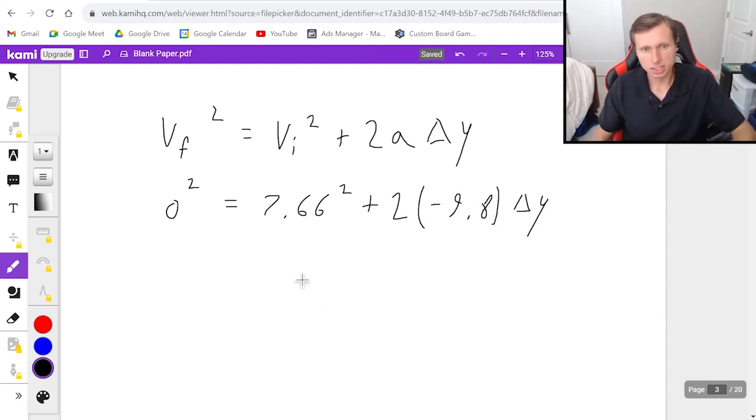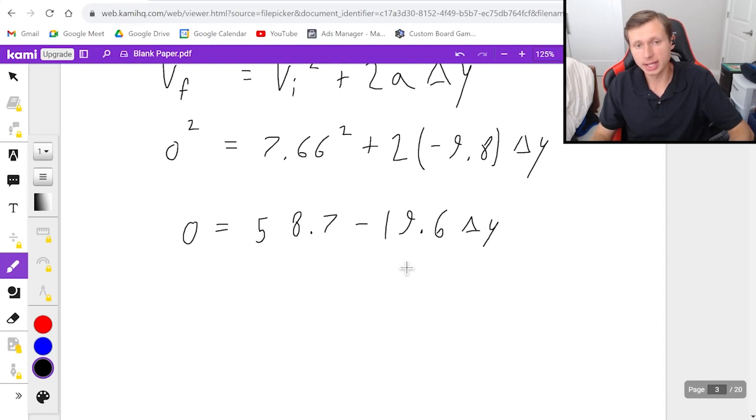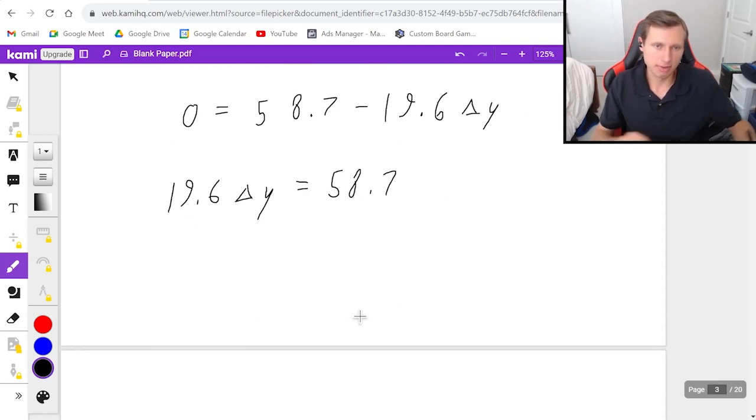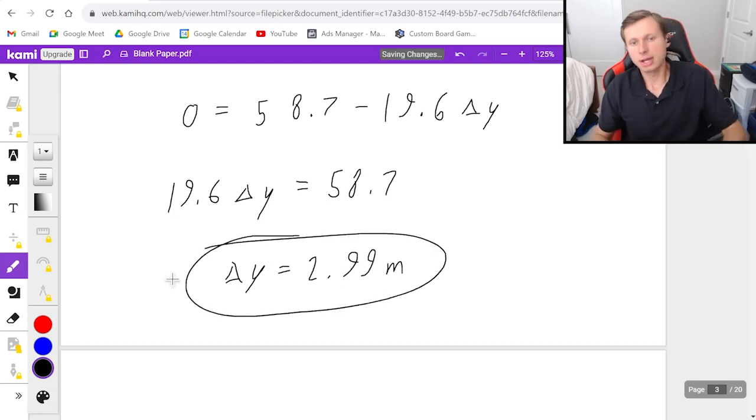And now I just got to start simplifying this. On the left, we have zero. On the right, that's going to be about 58.7 minus 19.6 delta y. And then if I want to solve for delta y, I'm going to add 19.6 delta y to both sides equals 58.7. And then we'll just divide by 19.6. And that will give me an answer of about 2.99 meters. You could round up to 3 if you wanted. I don't really care. But there's our answer. There's the peak height for this problem.